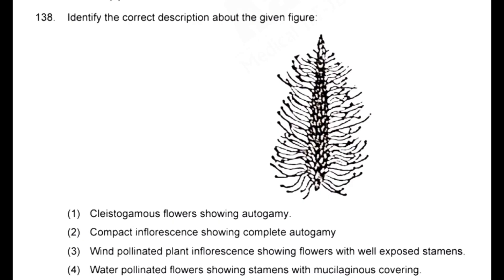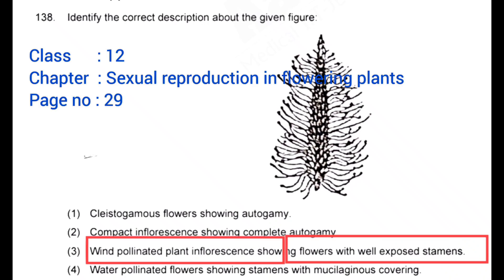Identify the correct description about the given figure — correct answer: option 3, wind pollinated plant inflorescence showing flowers with well-exposed stamens.